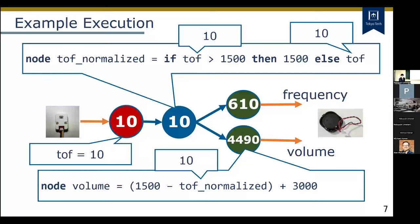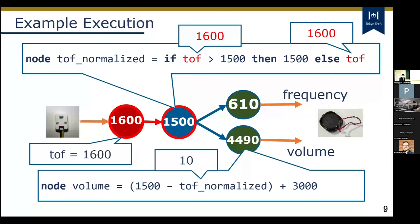Program execution in MFRP is expressed as updating node values. Suppose the values of input node TOS is 10; the values of the other nodes follow accordingly. Now suppose that the value of TOS becomes 1600 — then the value of TOS-normalized, which directly depends on TOS, changes to 1500 according to its definition. Finally, the values of the two output nodes also change accordingly.